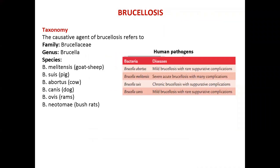Brucellosis is an infectious disease of humans and animals characterized by acute and chronic course, fever, and damage to the spleen, liver, genitals, nervous, circulatory, and musculoskeletal system.